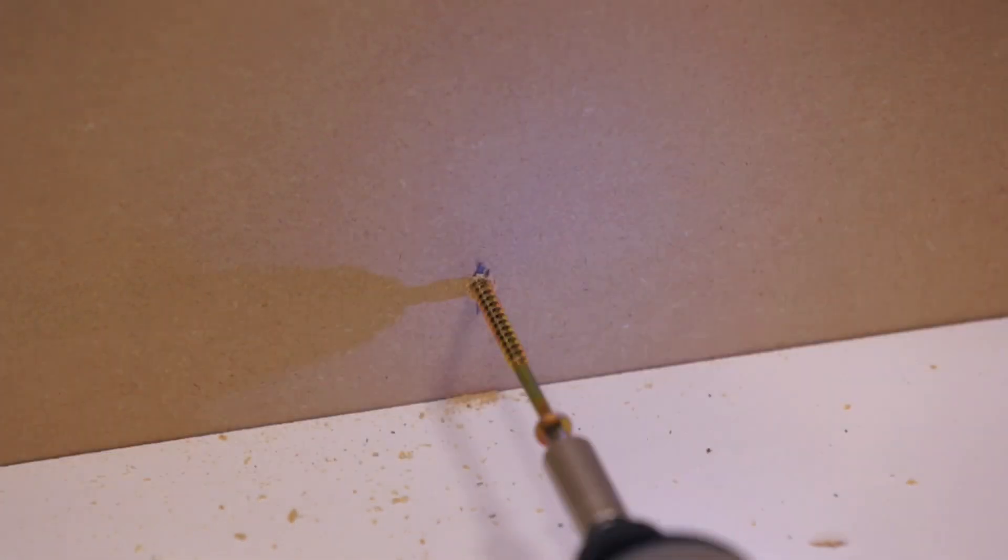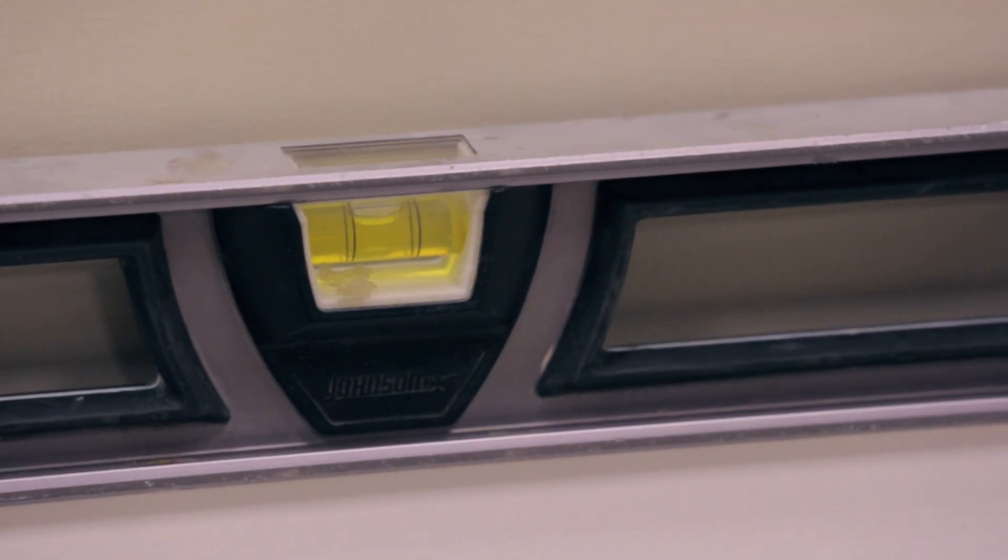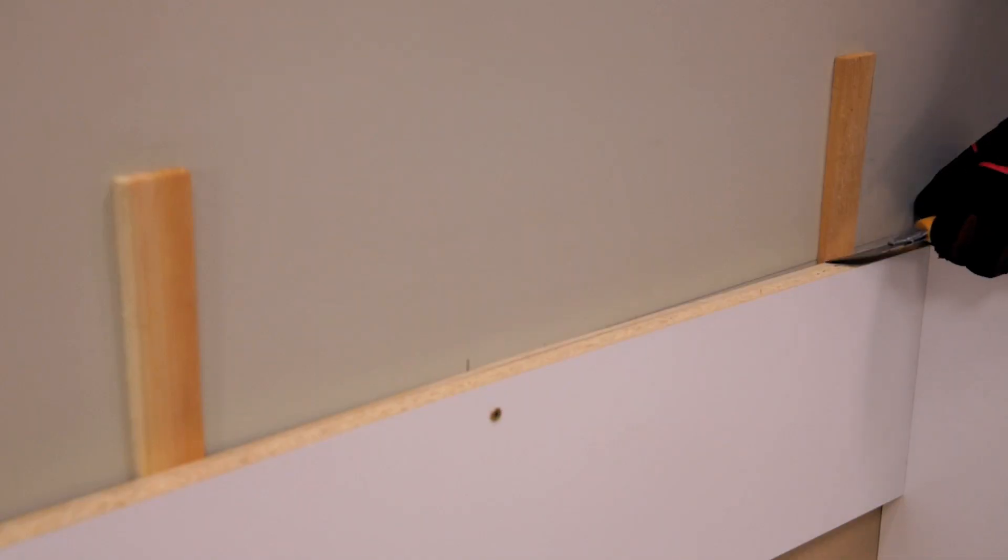Repeat this step at the bottom of the cabinet. Make sure the cabinet is level and adjust with shims if necessary. Cut away any protruding shims with a utility knife.